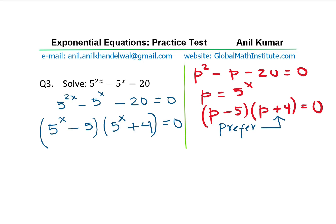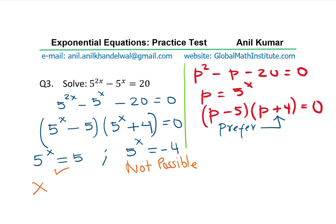From the factored form we have two conditions: 5 to the power of x equals 5, or 5 to the power of x equals minus 4. Since exponential functions are always positive, the second condition is not possible and we reject that solution. The valid condition gives x equals 1, because 5 to the power of 1 equals 5. So the solution is x equals 1.